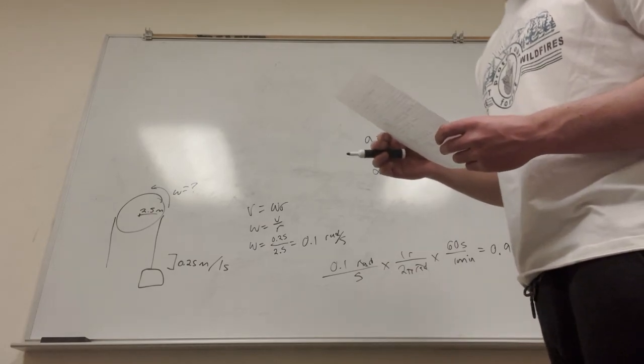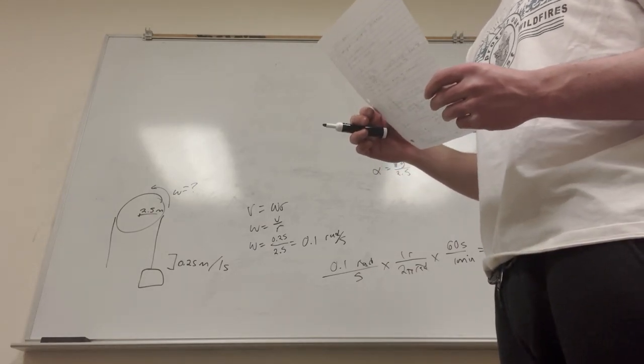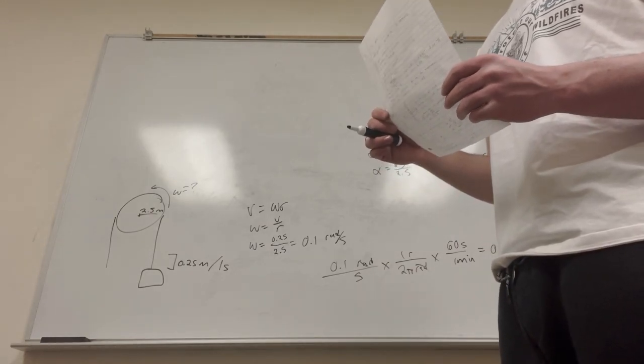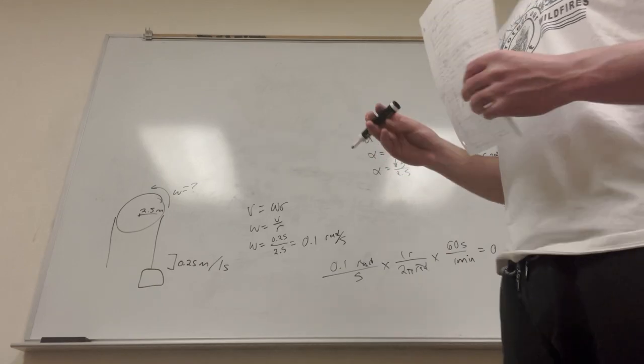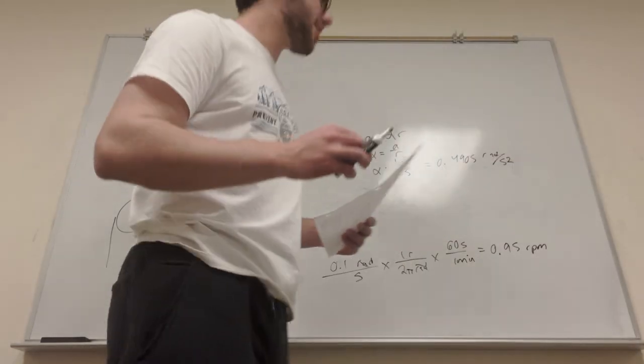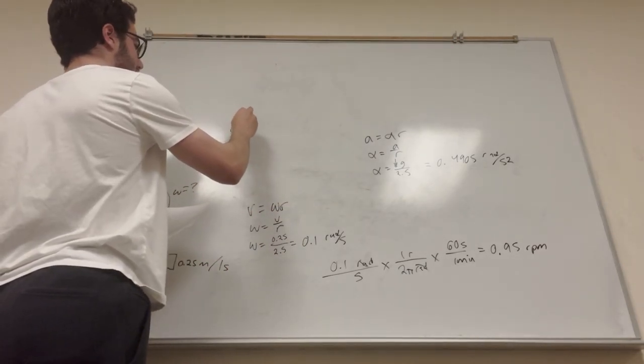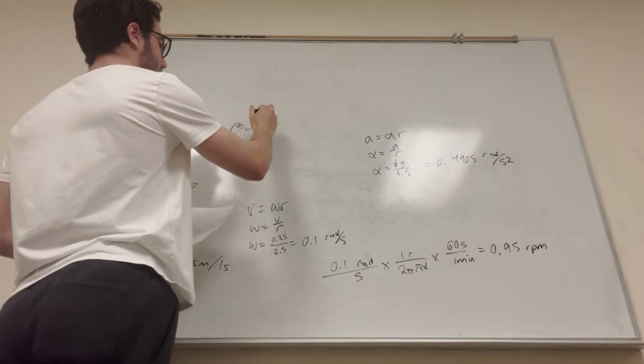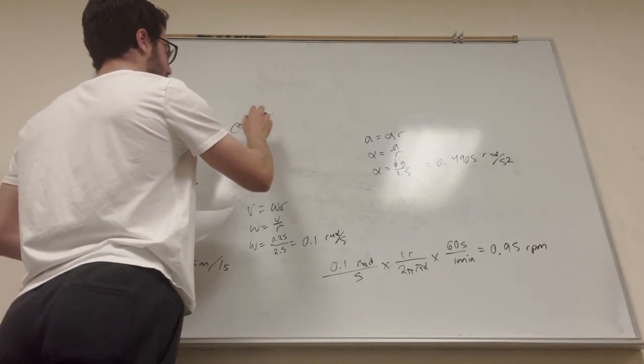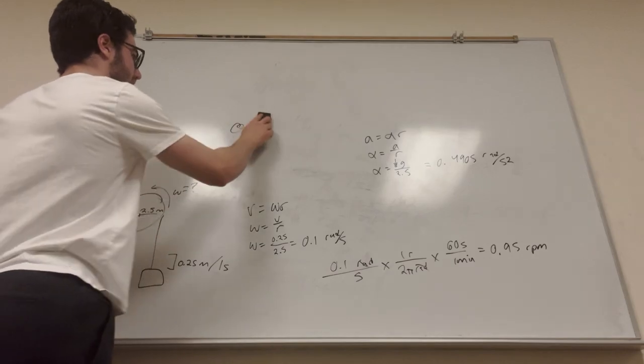Okay. Now part C. Through what angle in radians and degrees has the disk turned when it is raised to 3.25 meters? Okay, if you guys know what's coming next, you're going to be shocked, right? Okay, theta, which is angular displacement, is equal to displacement divided by radius. Simple other thing.